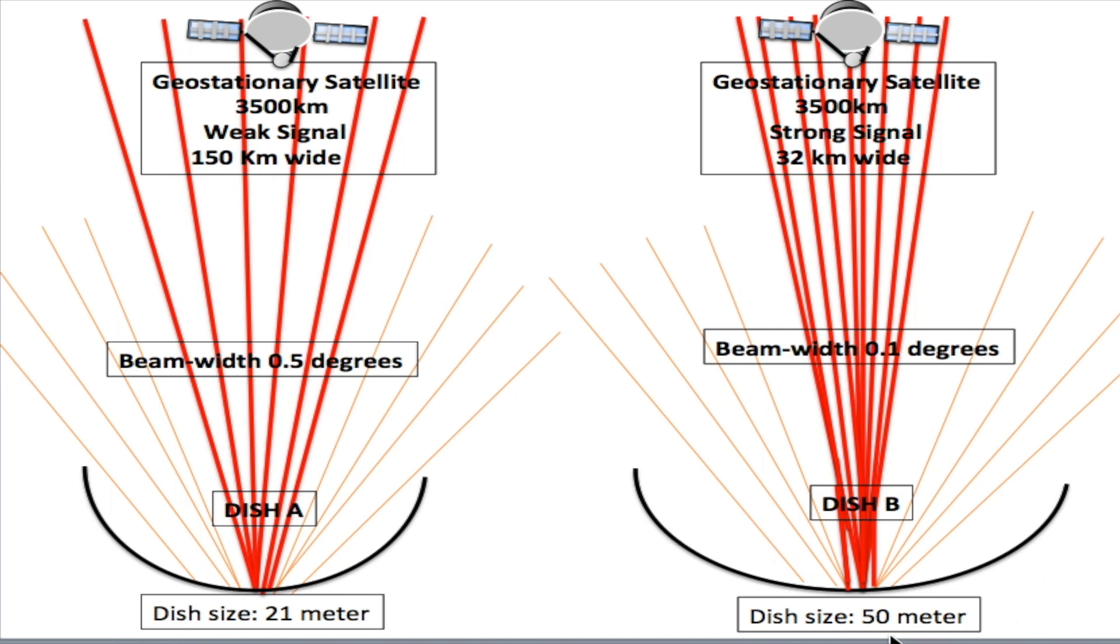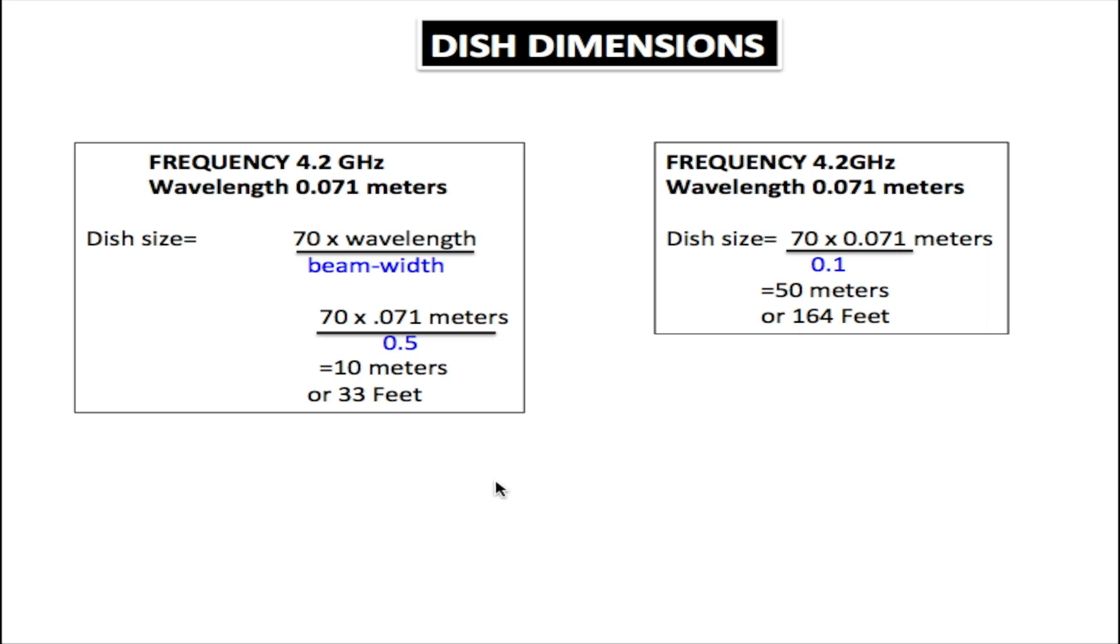Next I'm going to explain to you how you would calculate the size of the dish using the beam width and the wavelength. Now we're going to calculate the dish dimensions. Here we have the frequency of 4.2 gigahertz and we have our wavelength of 0.071 meters. Our dish size is equal to 70 times the wavelength over beam width: 70 times 0.071 meters over 0.5.